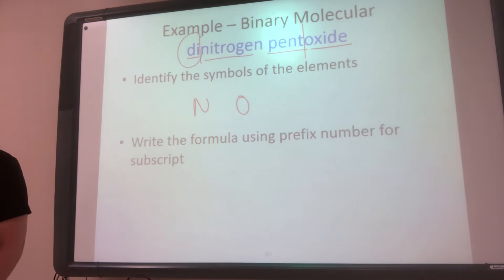So now we want to know how many I have. So di is a prefix, it stands for two. And pent, which is just going to be short for penta, because remember if this is a vowel, we drop the A. And pent stands for five. So then these prefixes become the subscripts. So there's two N's, there's five O's. And you do not reduce.